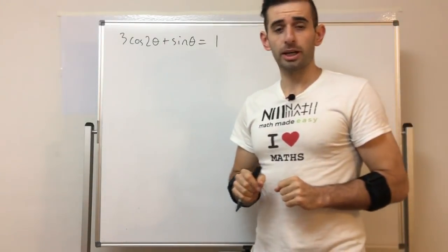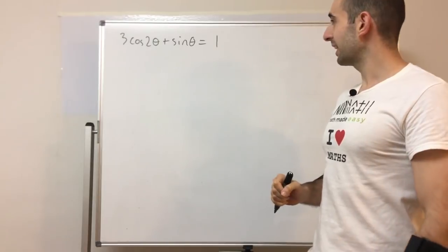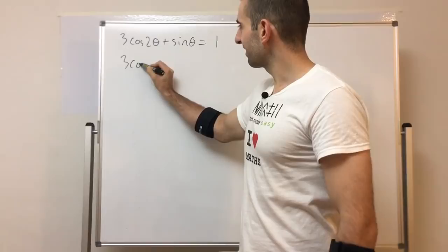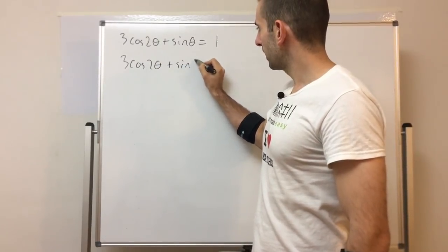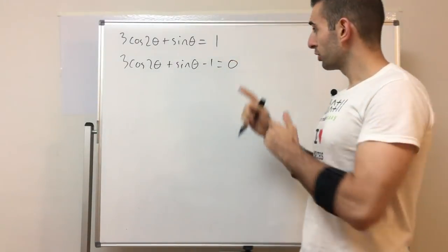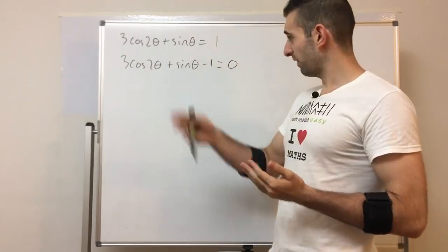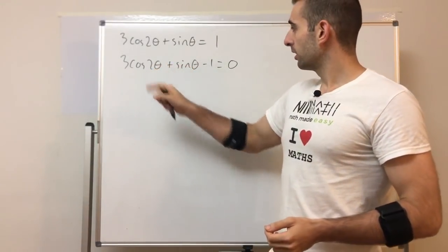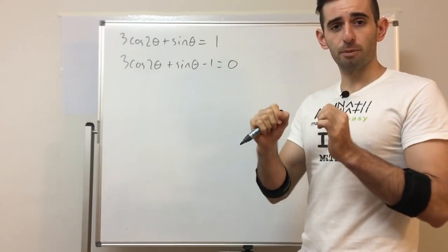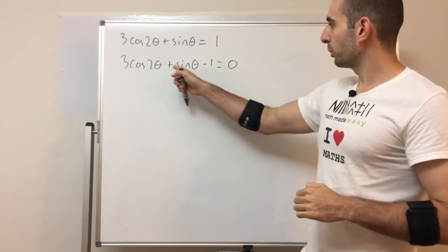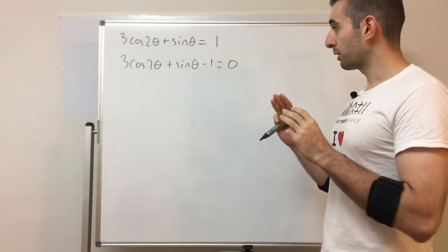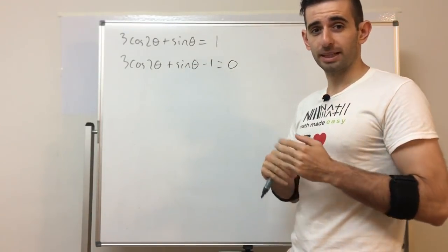Let's look at the first example: solve 3cos(2θ) + sinθ = 1. Bring everything to one side by subtracting one. Now ask yourself: can I factorize or use the quadratic formula? Definitely not — it looks nothing like a quadratic equation; I've got different trig functions. So straight away I need to use an appropriate trig identity. We have a double angle here, so I can substitute a double angle for cos(2θ).